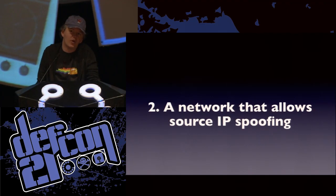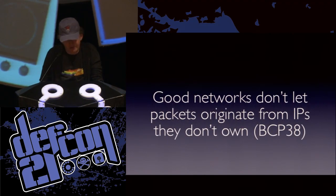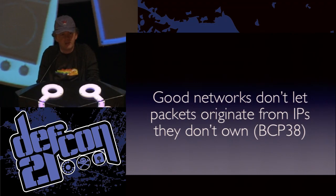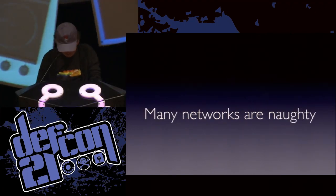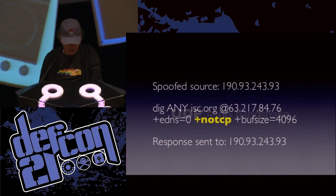The second thing you need is a network that allows source IP address spoofing. Good networks don't let packets that originate from IP addresses they don't own egress out of their network — this is called BCP 38, which has been the best common practice since the early 2000s. However, there are a lot of networks that don't follow it. UDP has no handshake, so unlike TCP, which is really hard to spoof source addresses of, with UDP you simply say 'the source is this' and everyone goes 'yeah, that's cool.' So long as the routers on the network are announcing that, you can pretend to be anyone you want. You set the source to your victim's IP, run that dig query to an open resolver with no-TCP, and the response gets sent back to the victim — you've reflected the attack back at your intended victim, and your attack is 50 times the volume you can generate.